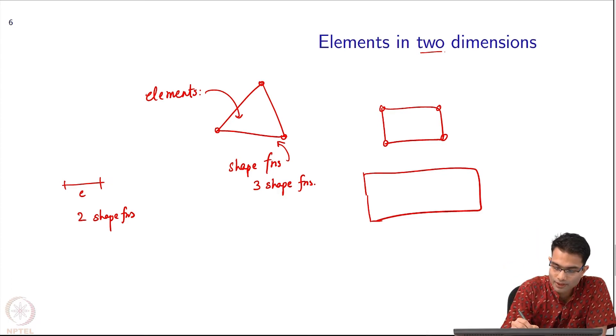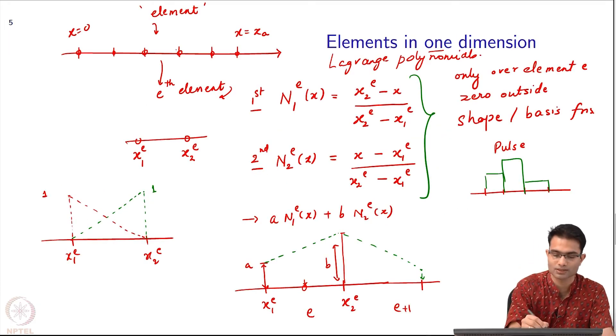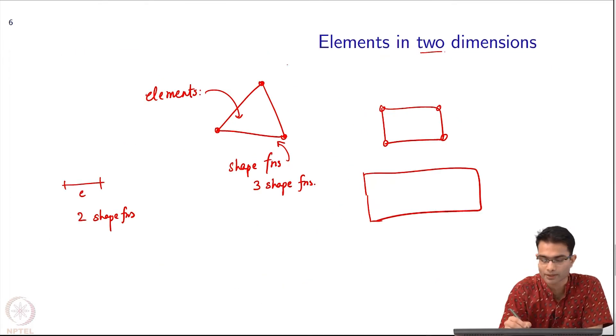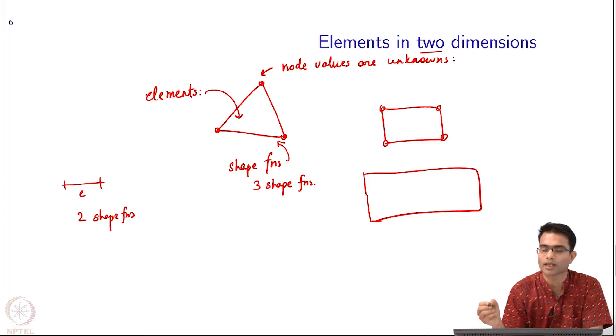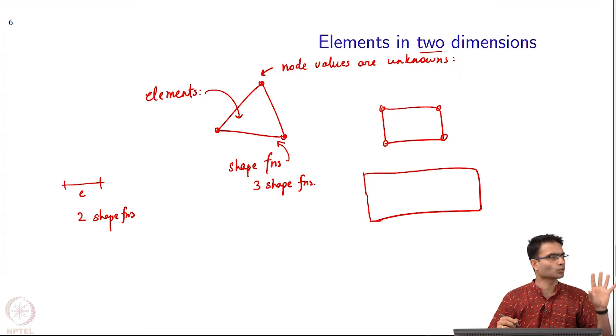You notice that here I am making the unknowns to be the values of the function at these nodes - that is a straightforward extension of what I did in 1D. In 1D my unknowns were these nodes, from that I defined these shape functions. I can continue that idea here and say node values are unknown.